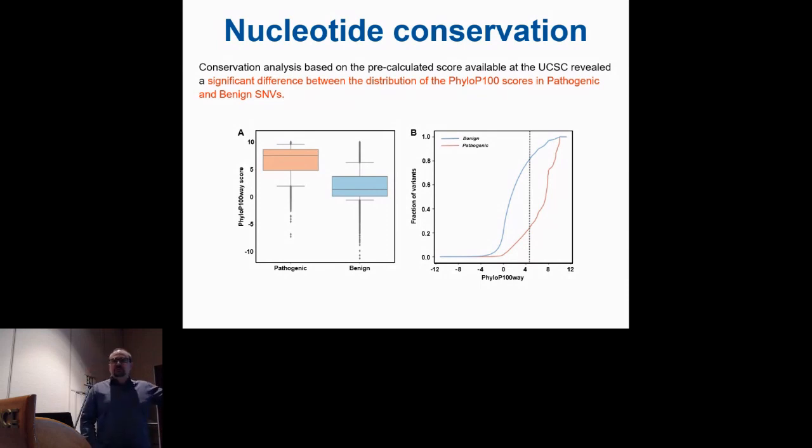Doing the same experiment, now we have values that can be negative and positive for the PHYLO-P100 score. Doing the same plot, we observe a different distribution between the pathogenic that tends to have positive values above zero, and for the benign-related positions where the value was around zero. This means that even using information at nucleotide level, the conservation is present. You can observe similar behavior also for non-coding variants annotated in ClinVar.